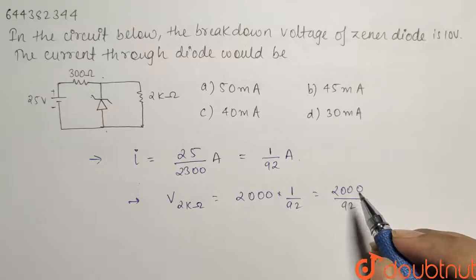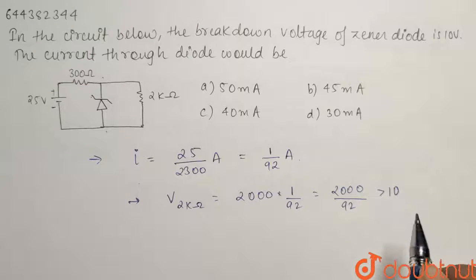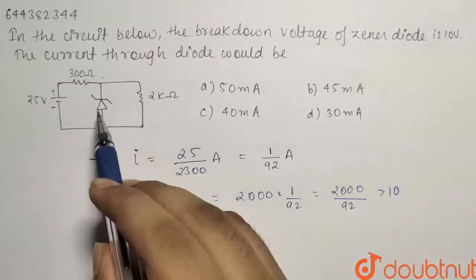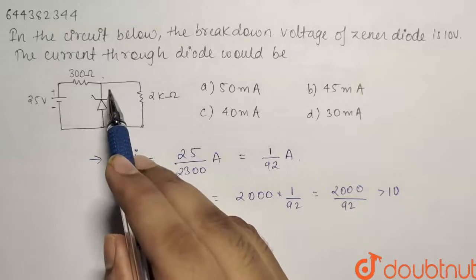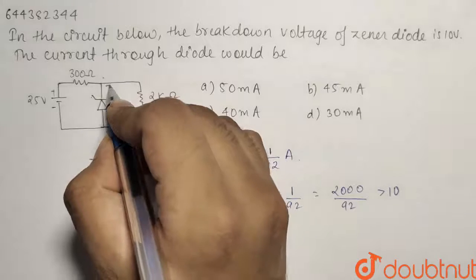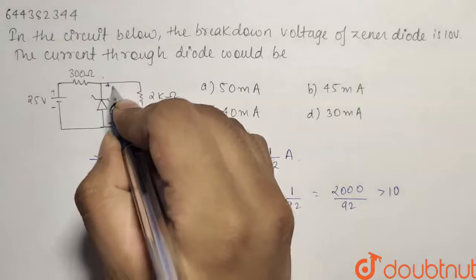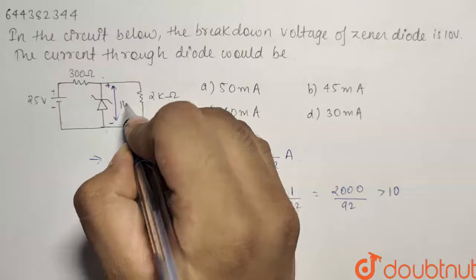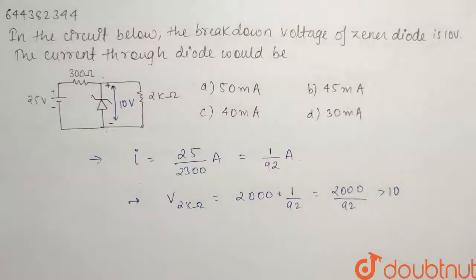Now we can see clearly that this quantity is always greater than 10. So if it is greater than 10, then the Zener diode will act in the breakdown region and what does that mean? It means that the potential between these two points will always be equals to the potential of the Zener diode that is equals to 10 volts.